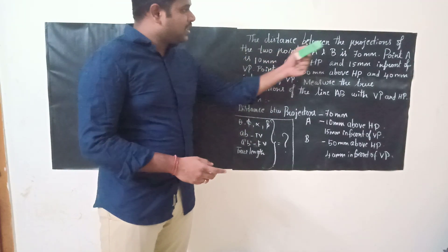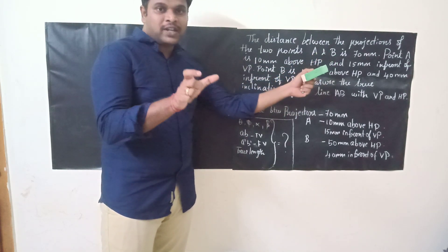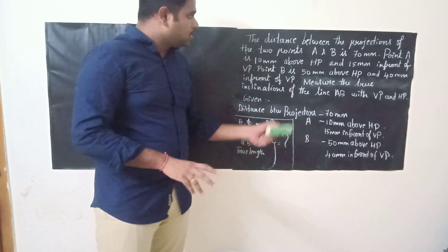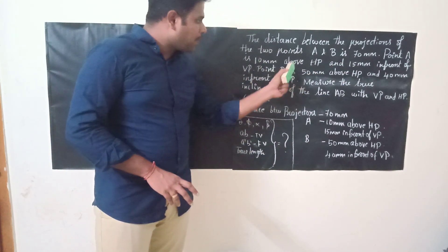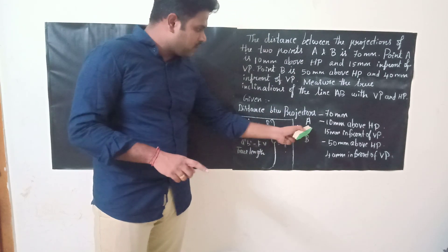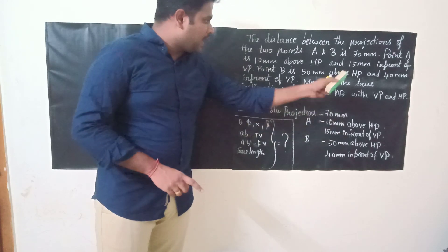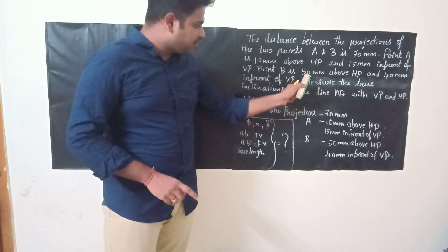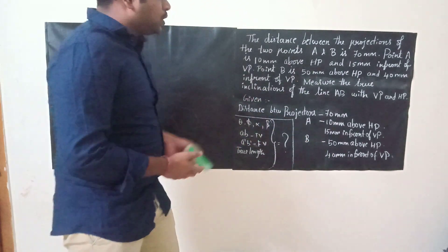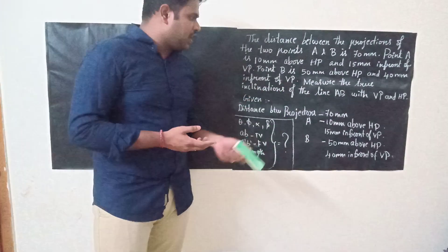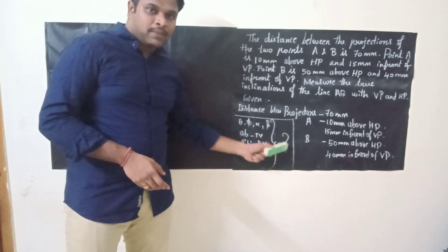The distance between the projectors between the two points A and B is 70 mm. Point A is 10 mm above HP and 50 mm in front of VP. Point B is 50 mm above HP and 40 mm in front of VP. We need to measure the two inclinations of line AB with VP and HP.